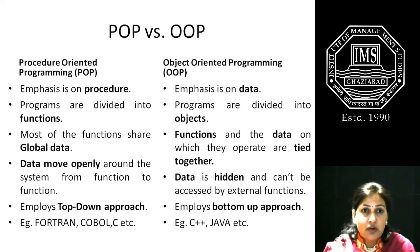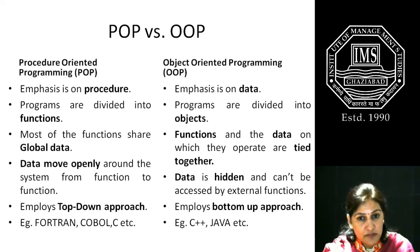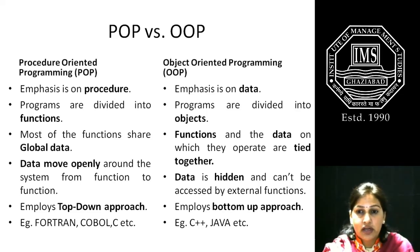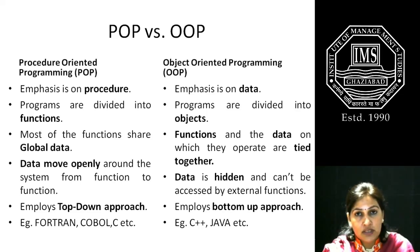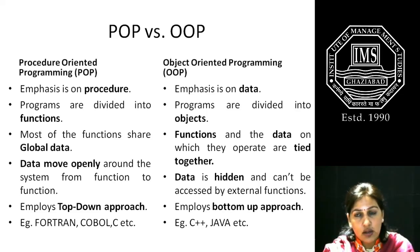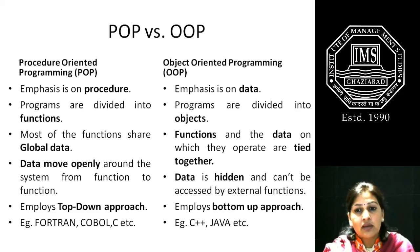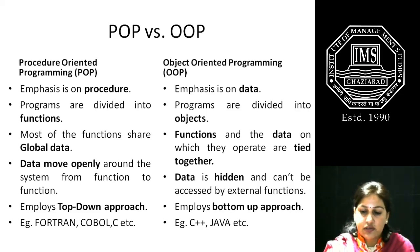Procedure-oriented programming employs a top-down approach, whereas object-oriented programming employs a bottom-up approach. Examples of procedure-oriented programming languages are Fortran, COBOL, C, etc., whereas examples of object-oriented programming languages include C++, Java, etc.